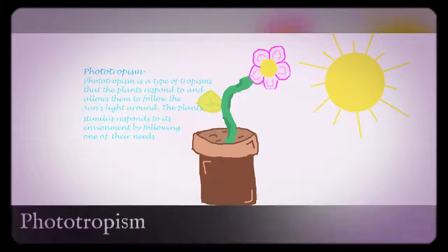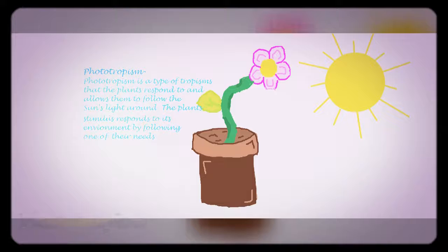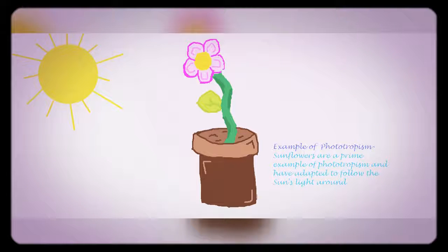Phototropism is a type of tropism that allows plants to follow the sun around. The plant's stimulus responds to its environment by following one of their needs. Sunflowers are a prime example of phototropism and have adapted to follow the sun around.